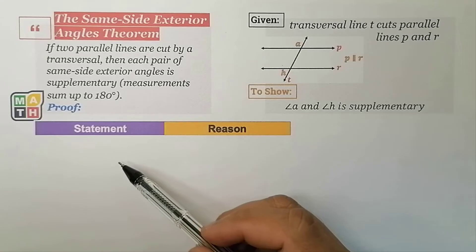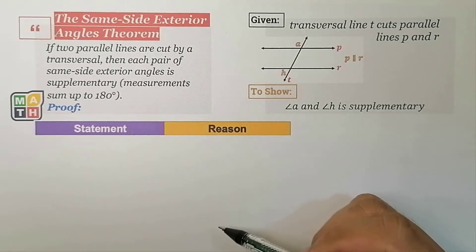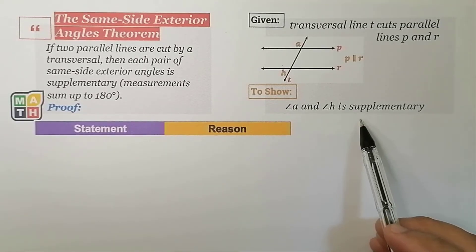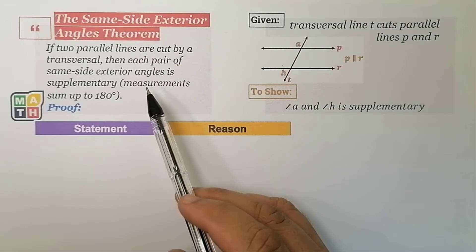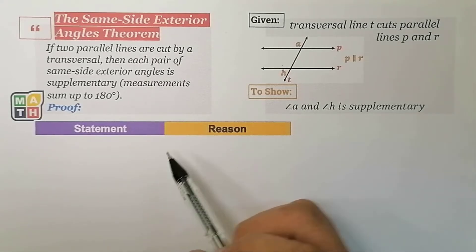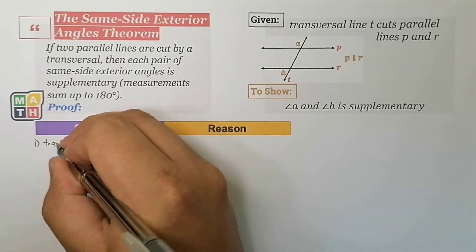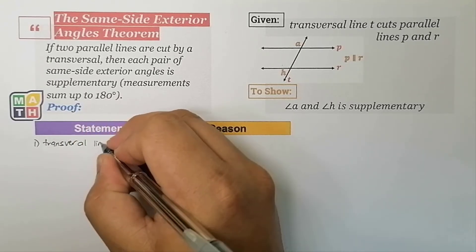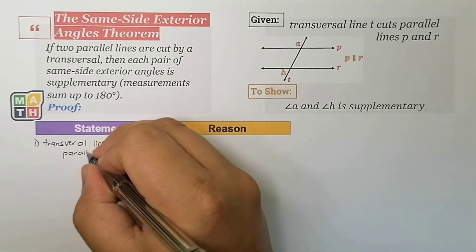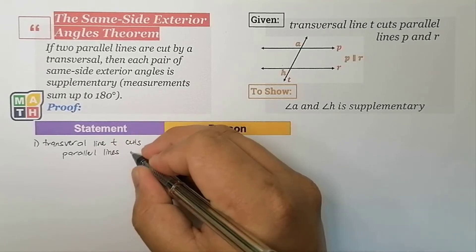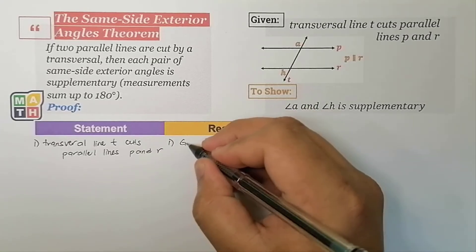The proof may be given by a two-column proof where we list down all statements and their reasons. We need to show the supplementary relationship as our last statement to prove this theorem. Statement number one: transversal line T intersects two parallel lines P and R. This is the given.